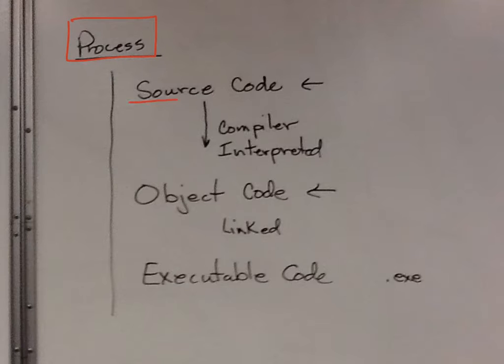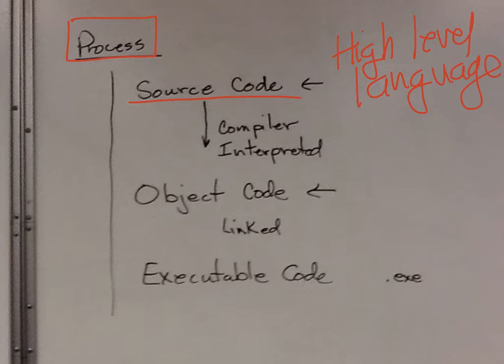When people code, they write source code. Typically, it's what we would call high-level language. Okay. These are things that you might have heard of, like C++, Python, Perl, Java, Fortran, Pascal, Cobalt, some older languages. So we have high-level languages that allow humans to write code, instructions for the computer.